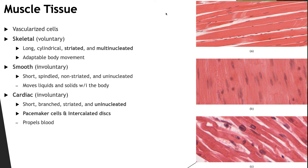Cardiac muscle tissue is found only in the heart. These cells are short and branched. They're usually uninucleated, but occasionally can be binucleated. They're involuntary. They possess striations and intercalated discs. They exhibit intermediate twitches with an intermediate contraction. Cardiac muscle moves blood and maintains blood pressure.